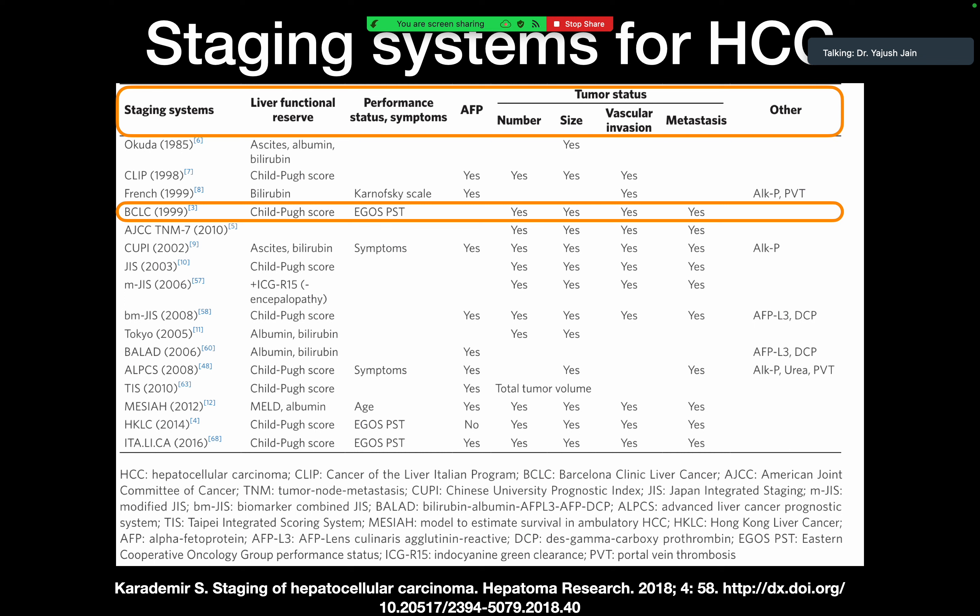The BCLC system is most commonly followed worldwide. It evaluates the patient in terms of liver function based on the Child-Pugh score, performance status evaluated on ECOG status, and tumor status in terms of number, size, vascular invasion, and metastasis. There was a recent update of BCLC which we will discuss in a stepwise manner.